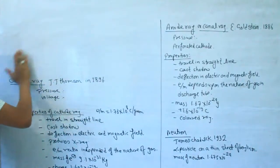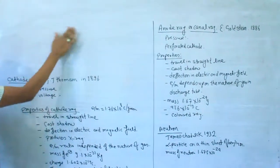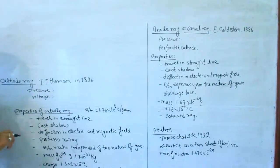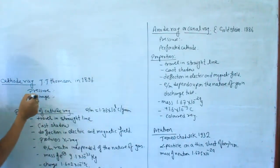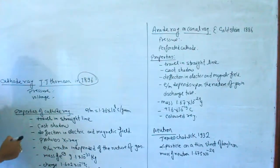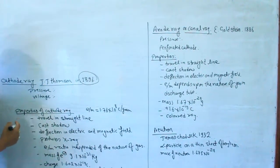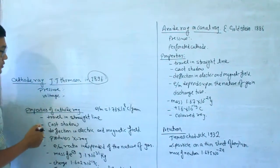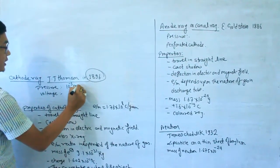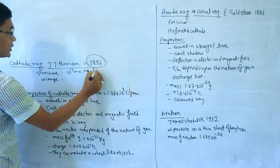The discharge tube experiment is famous for the cathode ray. This is Thomson's experiment. The pressure is 10 to the power minus 3 mmHg — this is low pressure.